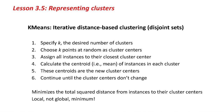The first algorithm we're going to look at is called K-Means. It does iterative distance-based clustering. First, you specify the desired number of clusters — we call that K. The algorithm chooses K points at random as cluster centers and assigns all instances to their closest cluster center. Then it calculates the centroid of the instances in each cluster — the mean of all the instances — and these centroids become new cluster centers. It repeats until the cluster centers don't change. This algorithm minimizes the total squared distance from instances to their cluster centers, but it finds a local minimum, not a global minimum, so you get different results with different random number seeds.